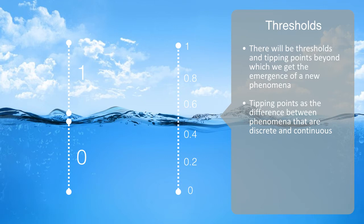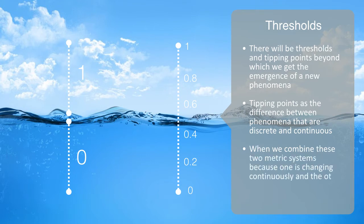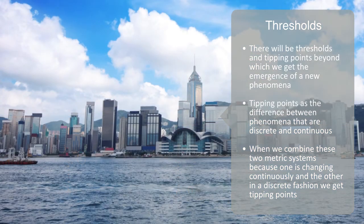When we combine these two metric systems, because one is changing continuously, and the other in a discrete fashion, we get tipping points. To illustrate this, imagine the government in a country, makes a policy that once a city reaches a threshold of a million people, then they'll fund the building of an airport for that city.